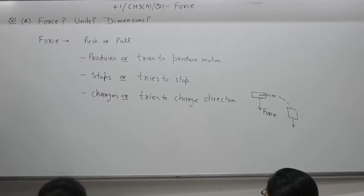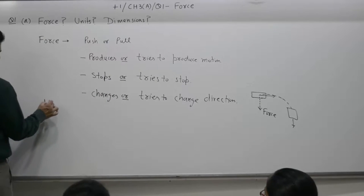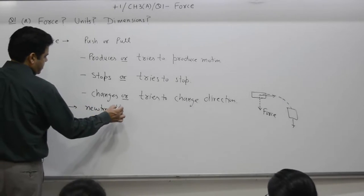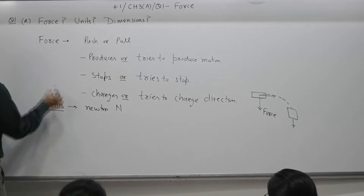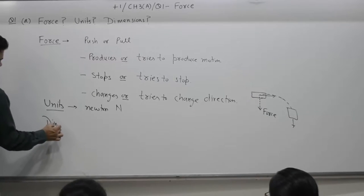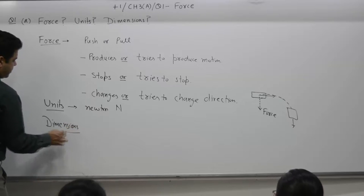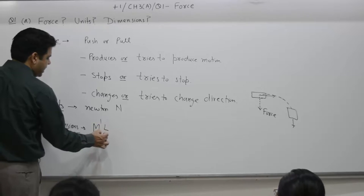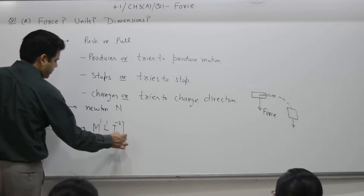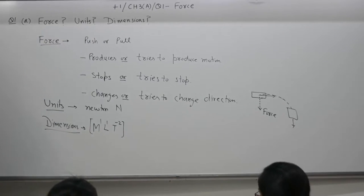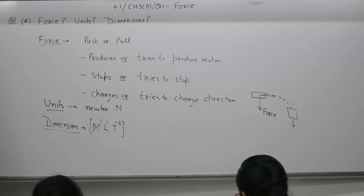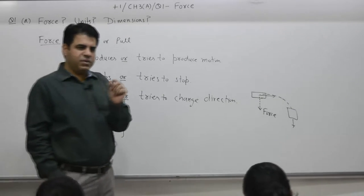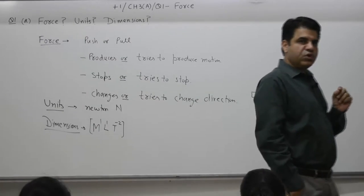Then what are its units? Units: Newton (N). Dimensions or dimensional formula: mass into acceleration. Acceleration is what? Length by time square (MLT^-2). Time with you is four minutes. And try to quote examples also. I have given you the examples but I have not written on the board. So try to quote examples also.